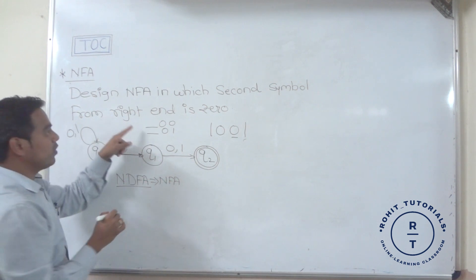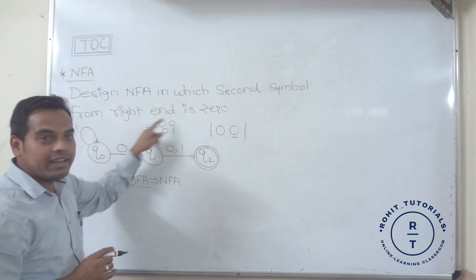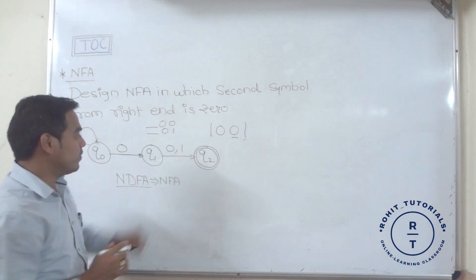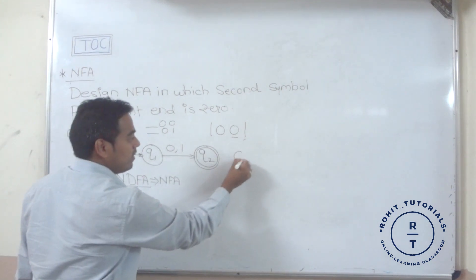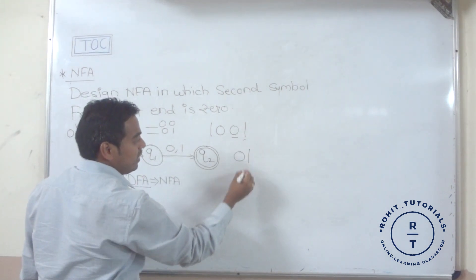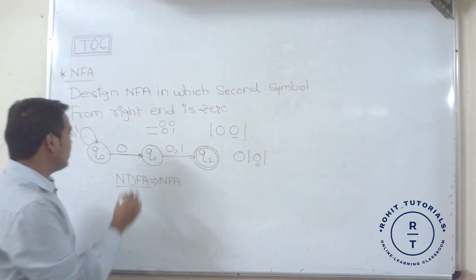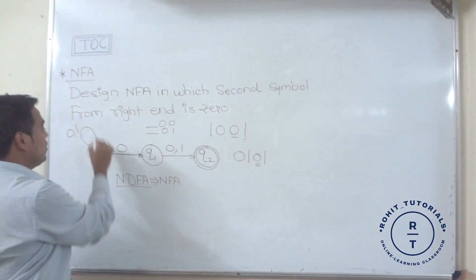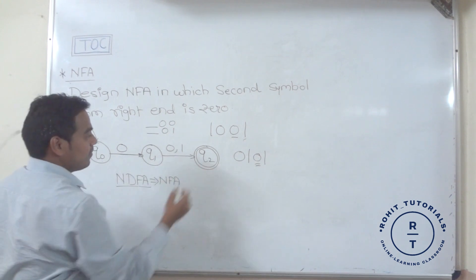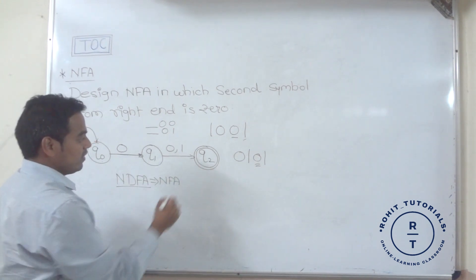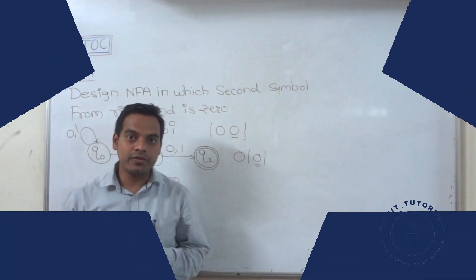This is the final non-deterministic finite automata for the given problem where the second symbol from the right end is zero. For example, the input string '0101' has its second symbol from the right as zero — zero, one, zero, one — and it is accepted. This is the final NFA. Thank you.